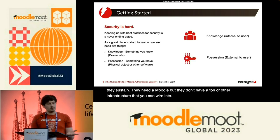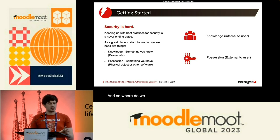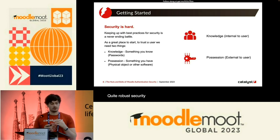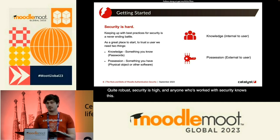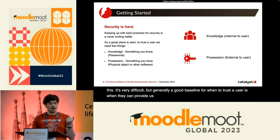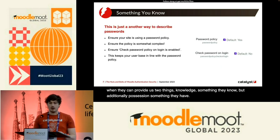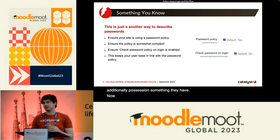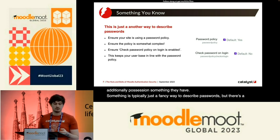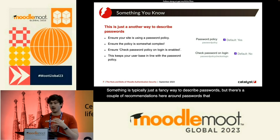So where do we start to harden Moodle security to do something quite robust? Security is hard — anyone who's worked with security knows this. Generally, a good baseline for when to trust a user is when they can provide two things: knowledge — something they know — and additionally, possession — something they have. Something you know is typically just a fancy way to describe passwords, and there are a couple of recommendations around passwords that can help make it a bit better.